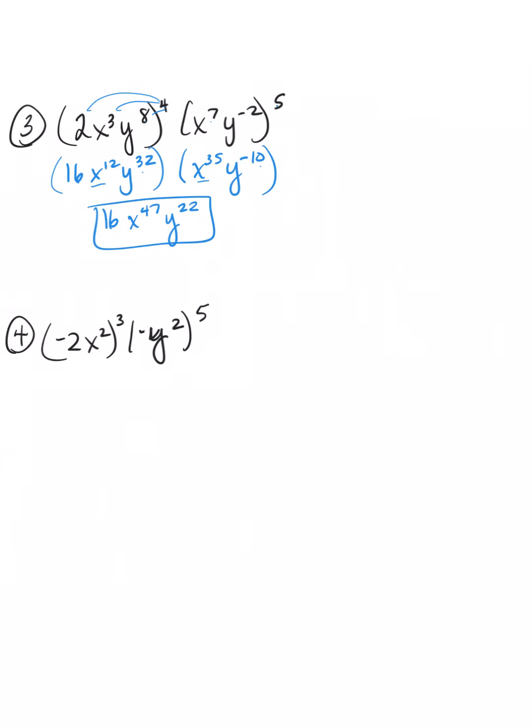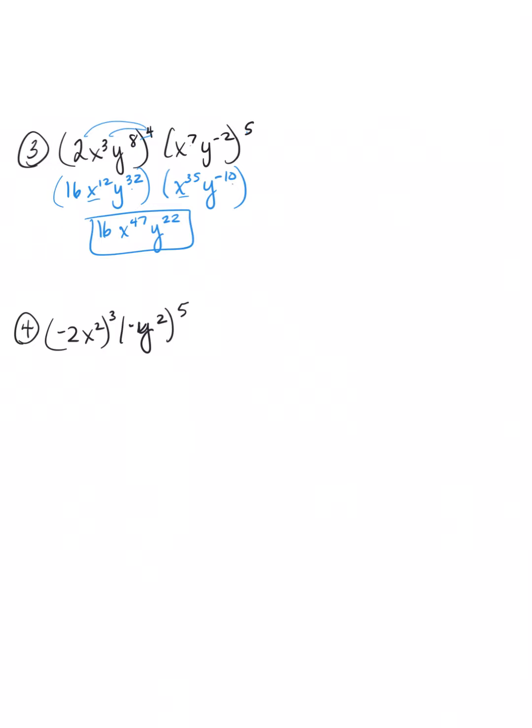Okay? So, we did two things here. We raised powers to the power, and then we did multiplication side by side. So, here's the rule you want to remember. You want to undo the outside powers first. Okay, undo the outside powers first.